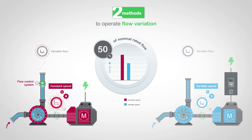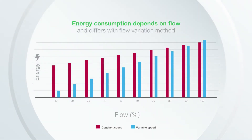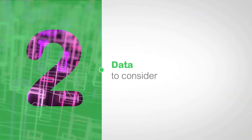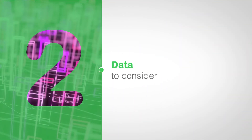With variable speed, energy approximates an optimum consumption proportional to the flow. On the contrary, at constant speed the motor application over-consumes energy at lower flow. Energy consumption depends on both the flow and the flow variation method. To detect potential energy saving and justify a closer look, remember: the higher the flow variation is, the higher the benefit of variable speed will be.